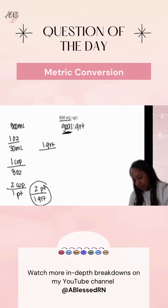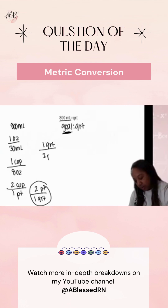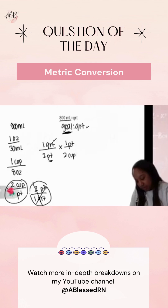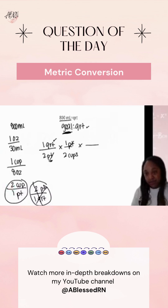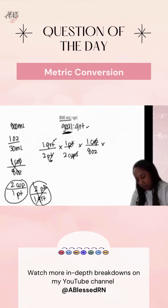My goal is always first and on top, so one quart equals two pints. One pint is two cups. Then I need my cups to cross out, so one cup is eight ounces — that crosses out. Now I've got my ounces, so one ounce equals 30 mL, and my ounces are gone.